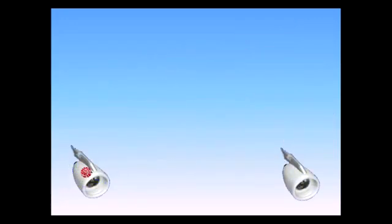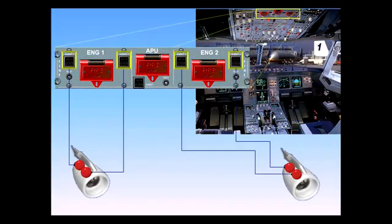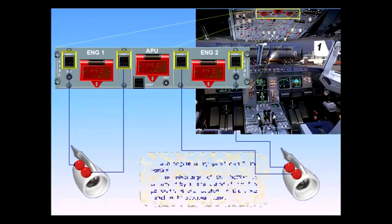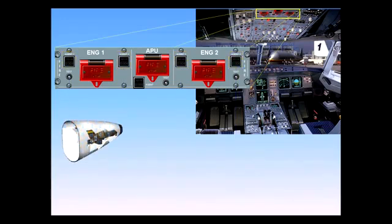Each engine is equipped with two fire bottles. The discharge of the bottles is controlled by an associated push-button switch. The push-button switches are located on the fire panel on the overhead panel. For the APU there is just one fire extinguisher bottle and only one discharge button.